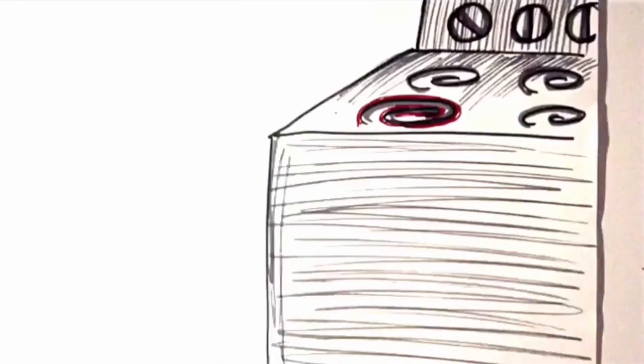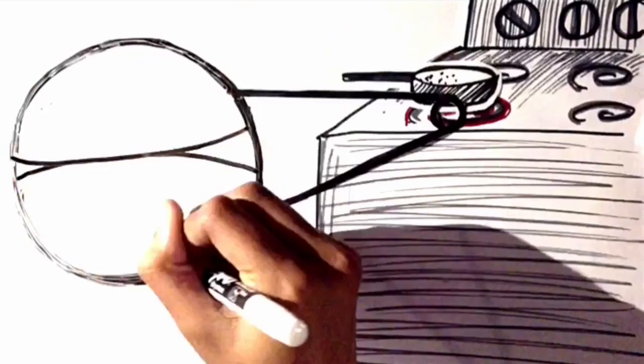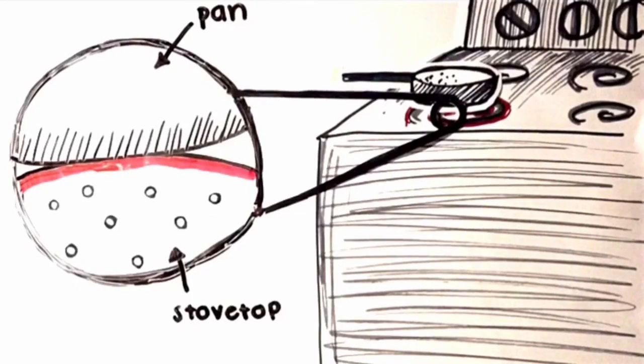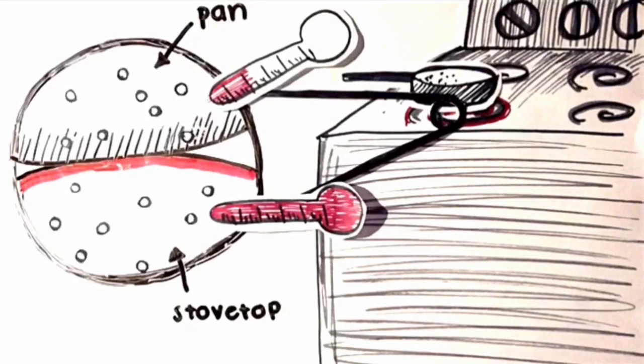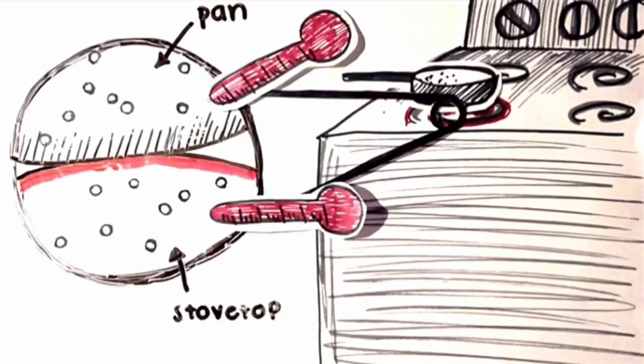So now here is the transfer of heat from the stovetop to the pan. Thermal energy is just the energy a single substance contains because of vibrations caused by temperature. The term thermal energy itself cannot be used to describe the transfer of energy between two substances. For this, we use the term heat.